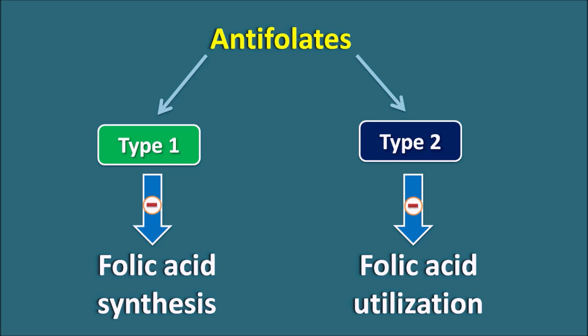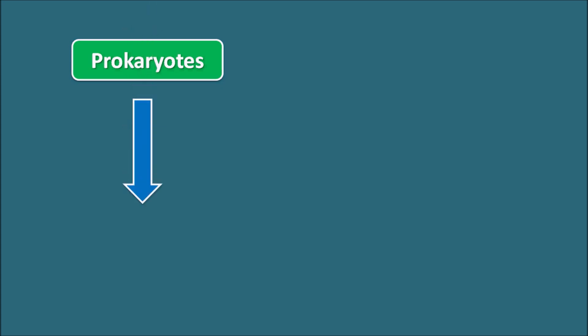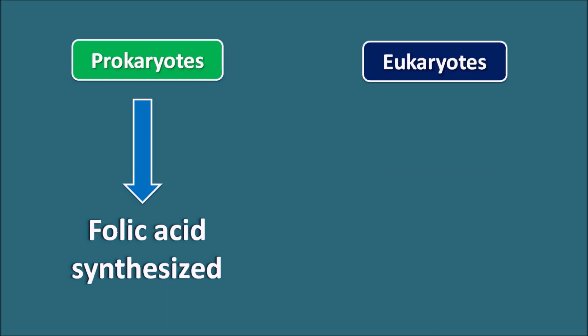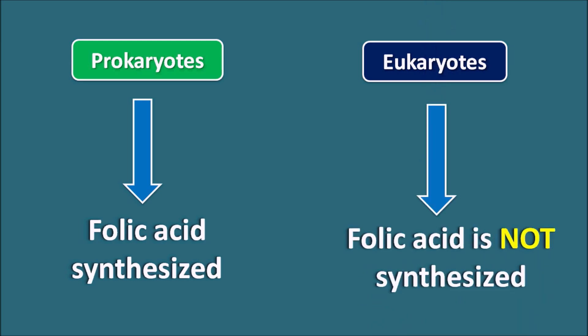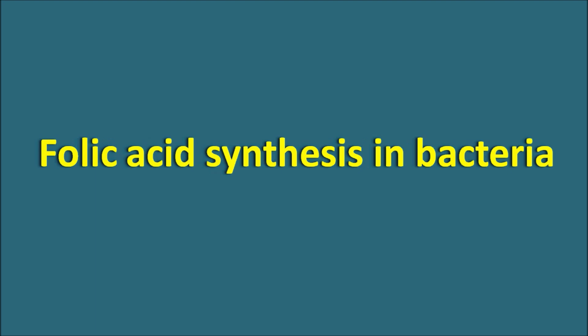First of all, we have to see the difference between prokaryotes and eukaryotes. Prokaryotes like bacteria can synthesize folic acid, whereas in eukaryotes like mammalian cells and protozoa, folic acid is not synthesized. Eukaryotes are highly organized and more advanced compared with prokaryotes. For eukaryotes, there is no need to synthesize folic acid because it can be easily transported through the cell membrane.